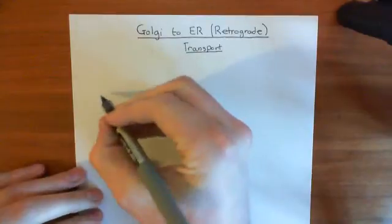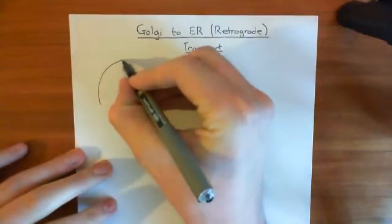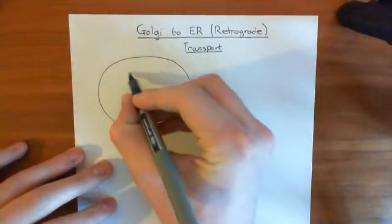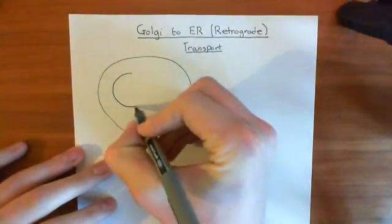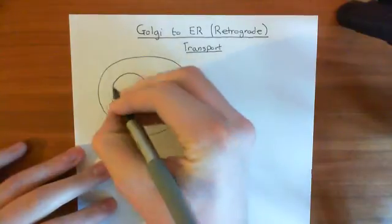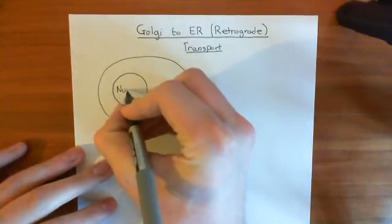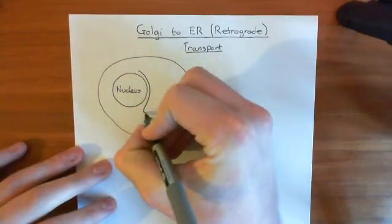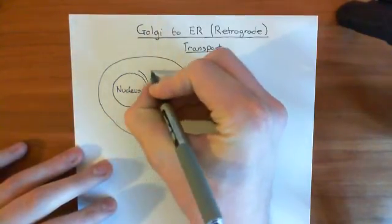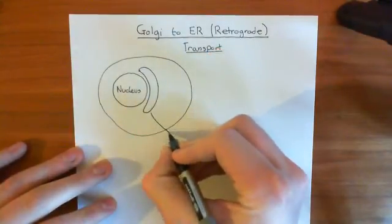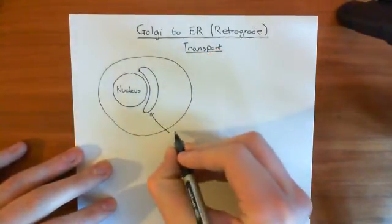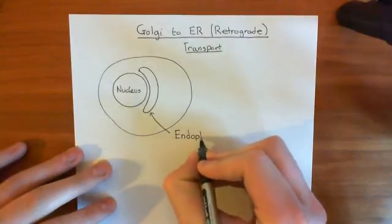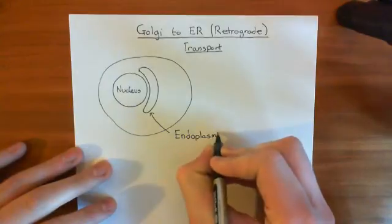So the big picture. If this is a cell here, let's draw a few of the organelles. Here's the nucleus. Surrounding the nucleus you have the endoplasmic reticulum, which we'll abbreviate to ER — endoplasmic reticulum. We'll colour it in orange.